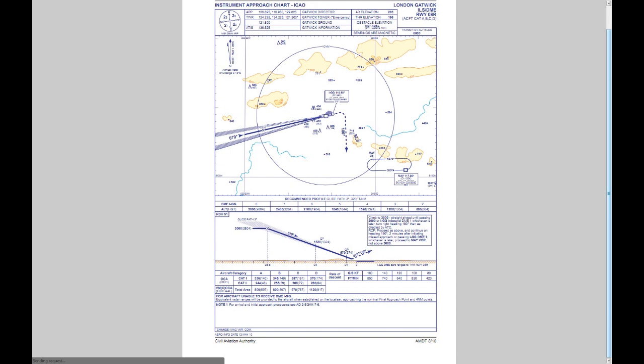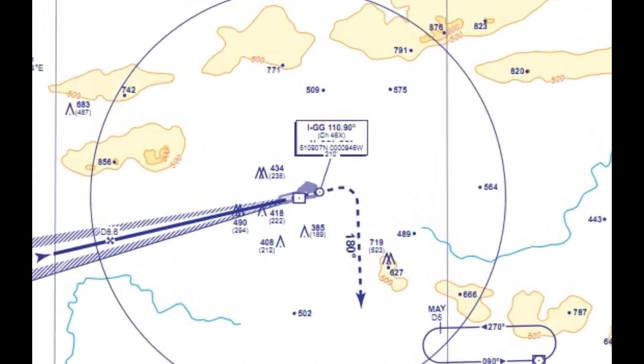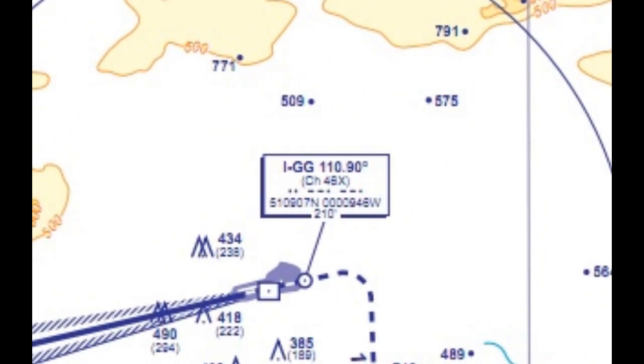First, you're going to want to get some charts. If you live in the UK, I'll put the link in the description below — it's the UK AIP website where you've got all the aerodromes with charts and relevant information. If you live in the United States, do a Google search for something like KJFK charts and you should get what you need. The only figures we're really focusing on today are the ILS frequency — 110.90 — and the localizer course.